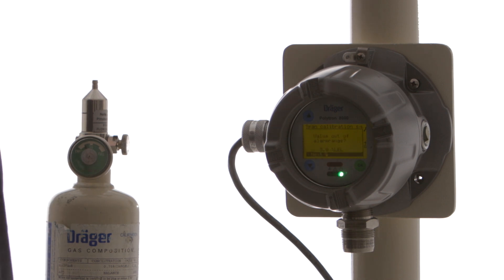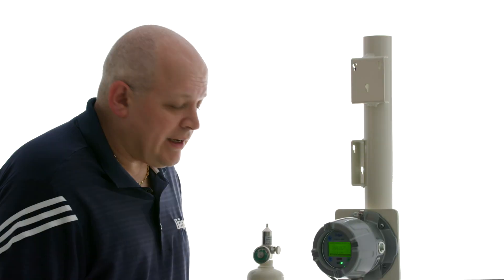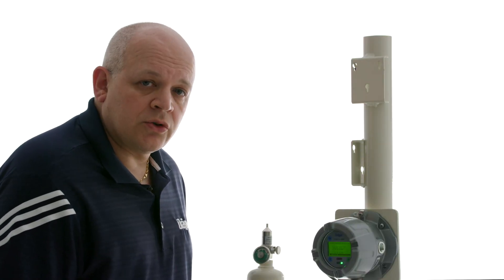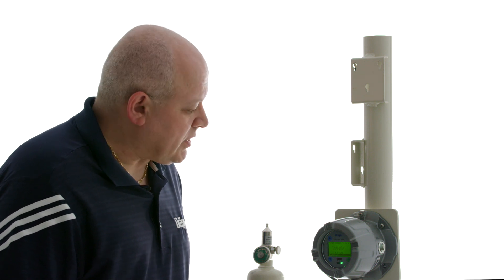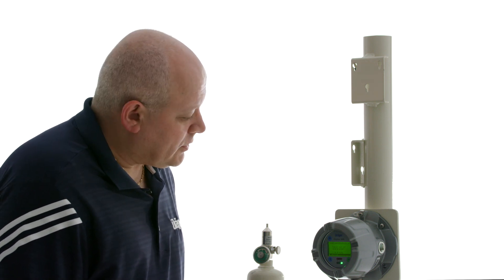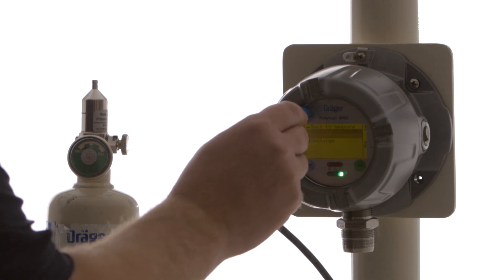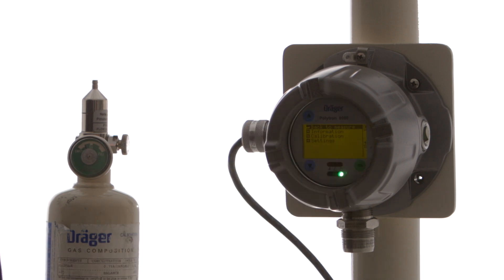Now it's asking us if the value is out of alarm range which at about 3% LEL most of the time it is. You just want to make sure that it's below the alarm setting that you have set. If it is in the alarm range and you select next, your controller may go into an alarm state. So we want to avoid that. So now we're at 0% LEL. Click next. And we're going to go back to our measurement screen. And our calibration is done.